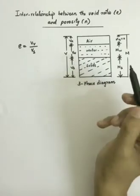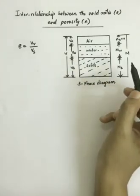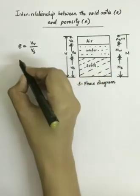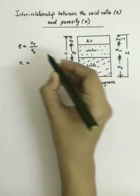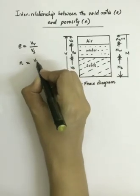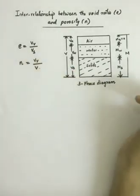And porosity is defined as the ratio of volume of voids to the total volume.